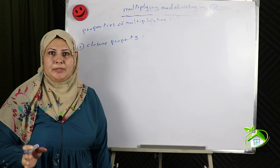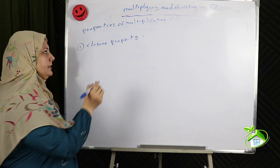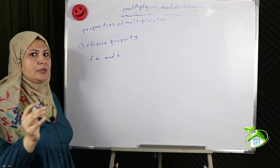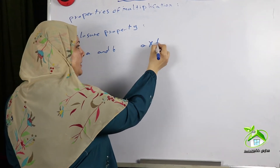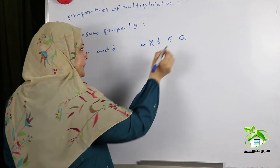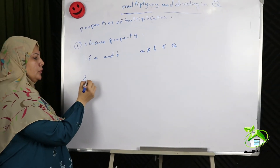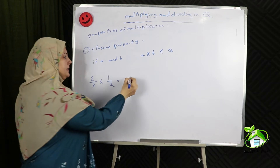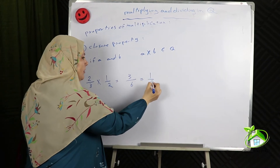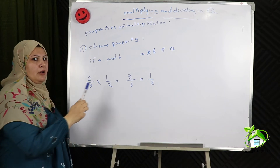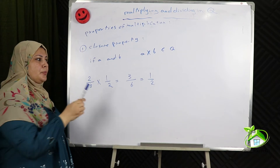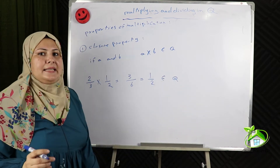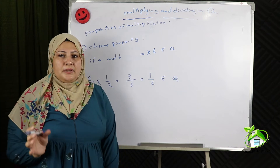Properties of multiplication. Closure property: if A and B are two rational numbers, then A times B belongs to Q. For example, 2 thirds times 1 half equals 2 over 6, simplified equals 1 half. Both 2 thirds and 1 half are rational numbers and their product also belongs to the rational numbers. So we can say that Q is closed under multiplication.